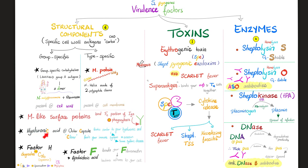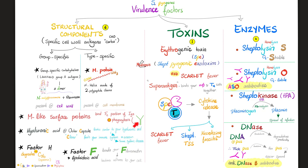The hyaluronic acid in the outer capsule is very clever because it looks very similar to your own hyaluronic acid, part of your connective tissue extracellular matrix. It fools your immune system because it resembles your own tissue, so the immune system is confused and Streptococcus pyogenes evades your immunity.